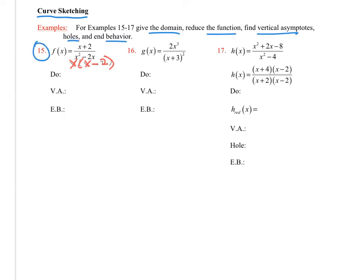Let's look at number 15. If you notice the denominator has a higher degree than the numerator, so straightaway our end behavior is going to be a horizontal asymptote and the equation for that is going to be y equal to 0. Make sure you include the y equal to — don't just put down 0.